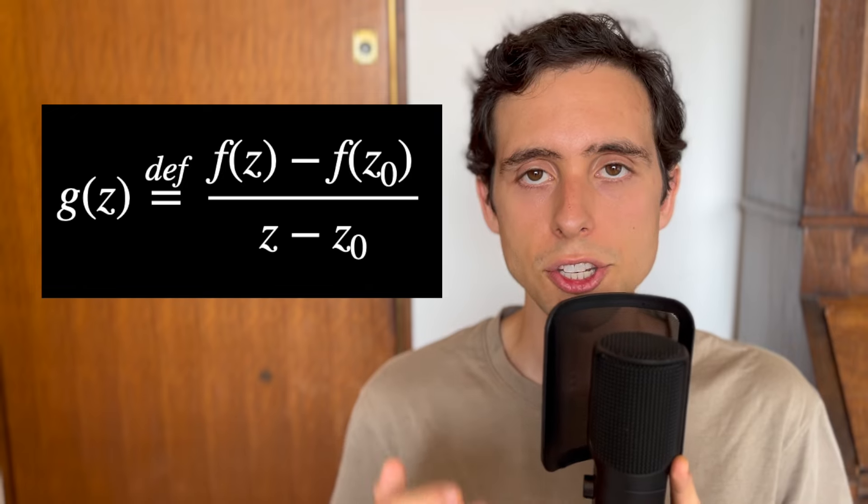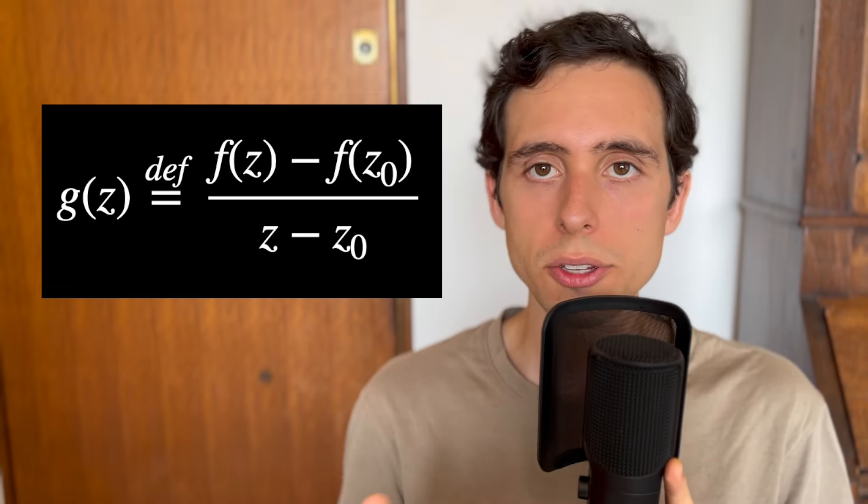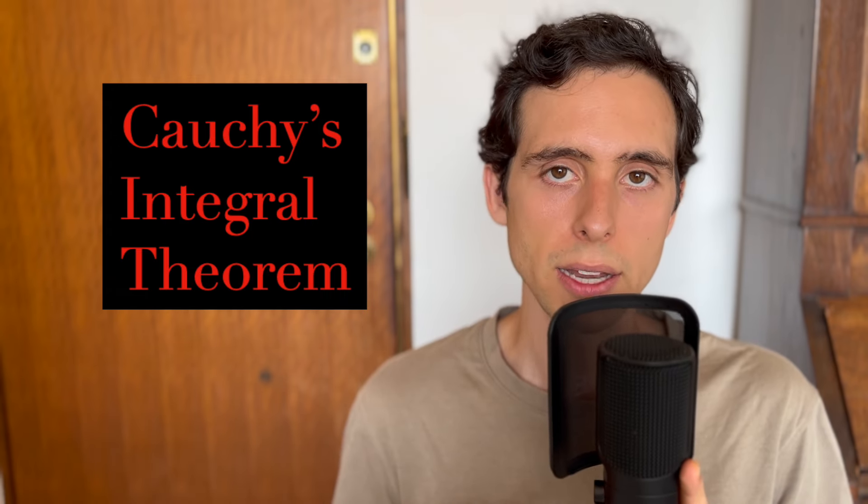Consider the holomorphic function g(z) as [f(z) - f(z0)]/(z - z0). Then we can integrate it over this closed curve. Since g is holomorphic, its integral over this closed curve must be zero. This is called Cauchy's integral theorem in complex analysis.